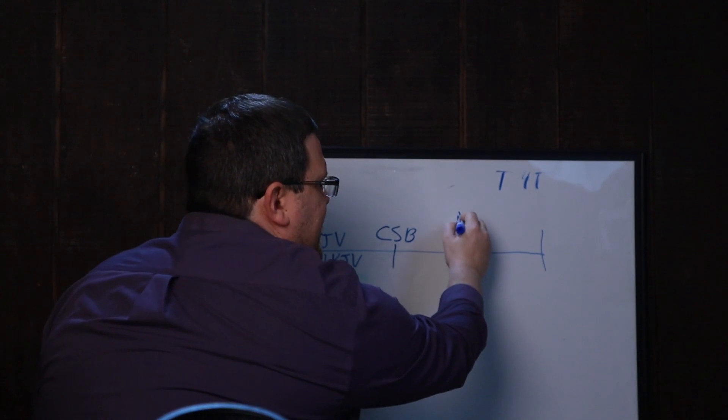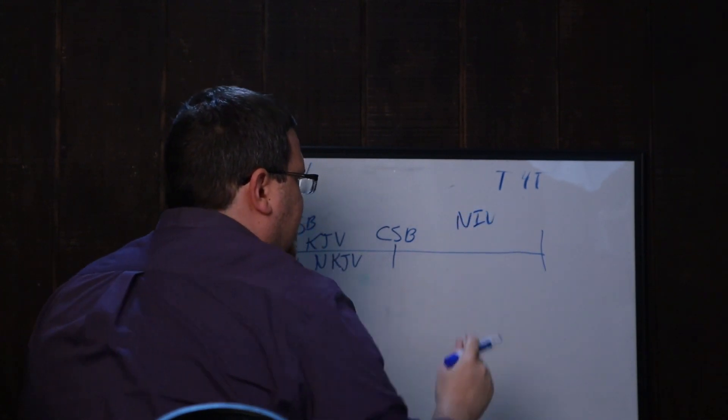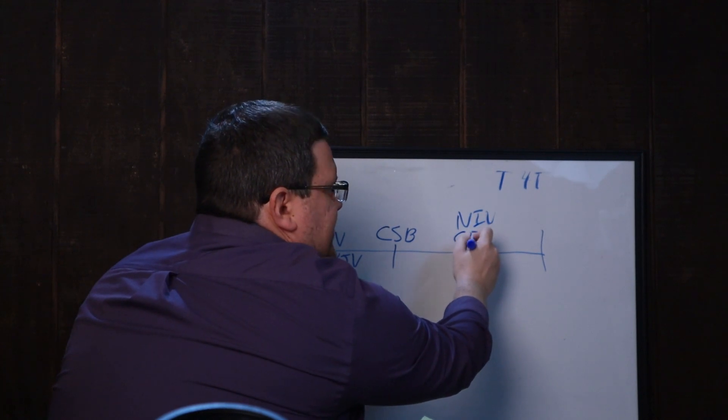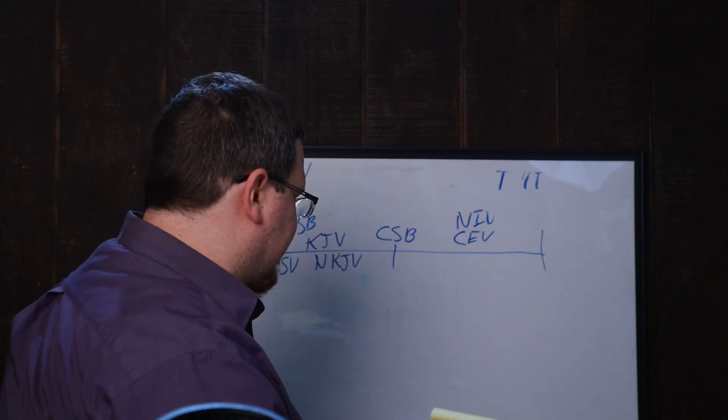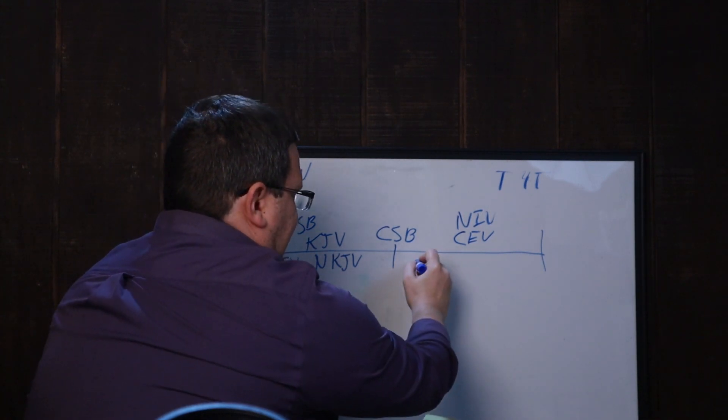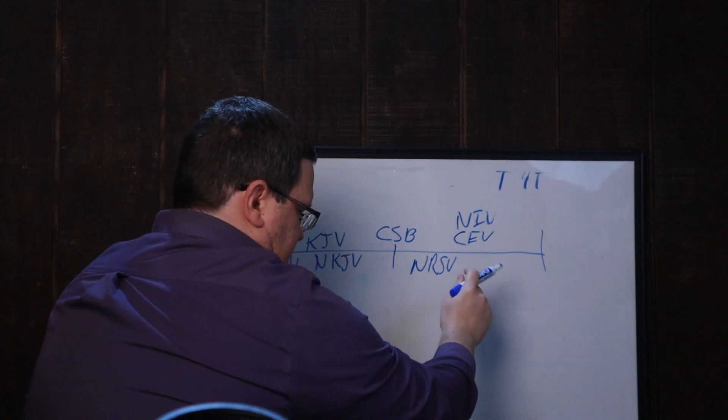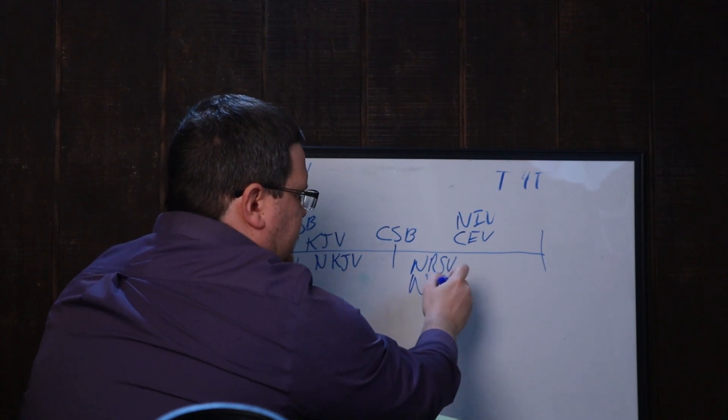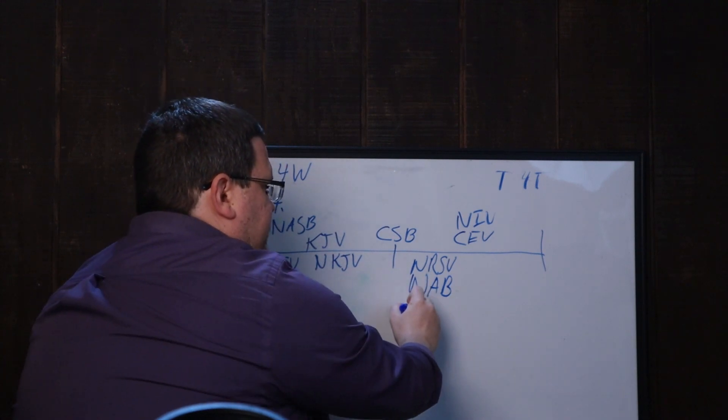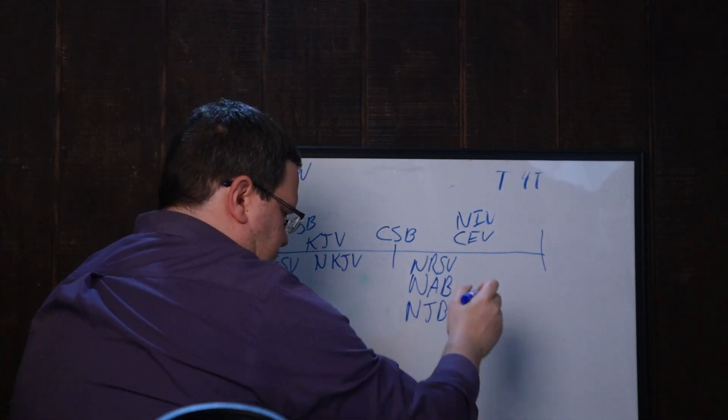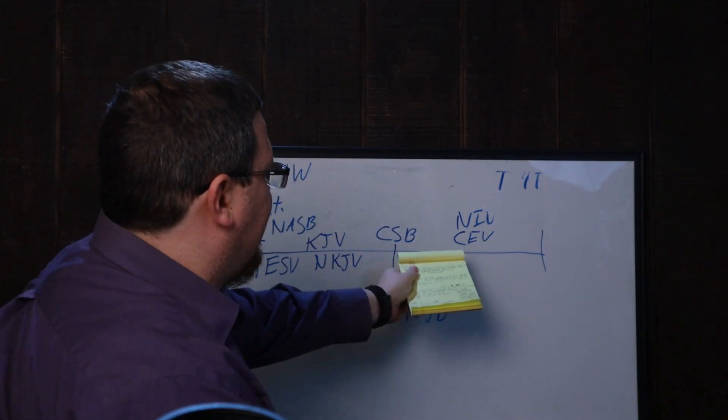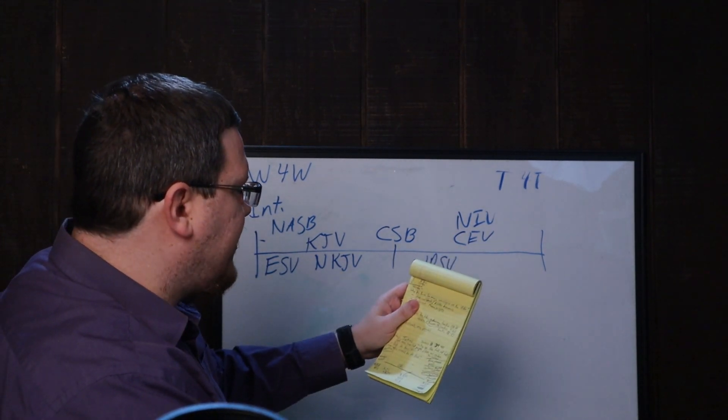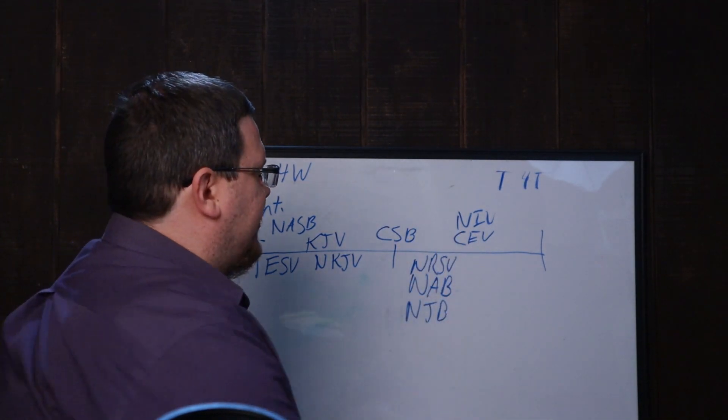The CEV, I haven't really seen too many people using the CEV recently. You also have some things like the NRV, NRSV, new revised standard version, NAB, which is that the Catholic Bible? I forget. And then New Jerusalem Bible. So you have like all these kind of in the middle too, but over here towards the thought for thought, you have your NIV, you have your CEV, and then kind of on the end here, you have this thing called the New Living Translation.